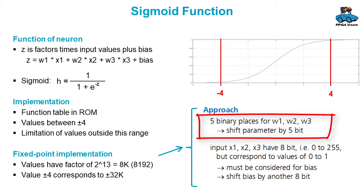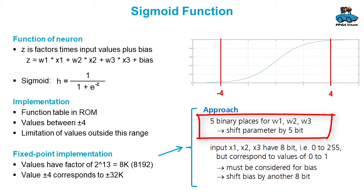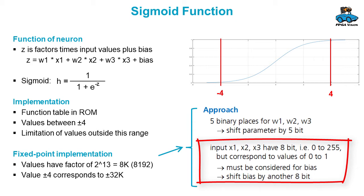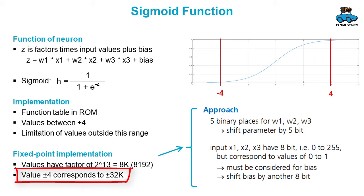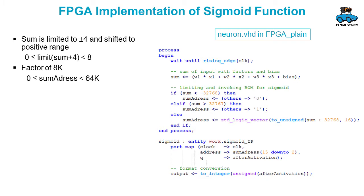The factors w have five binary places, so we shift by 5 bit. The inputs x have 8 bit, so we shift by 8 bit. This makes a total of 13 bit corresponding to 8192, so 8k. This means that the value plus minus four corresponds to a fixed point value of plus minus 32k. This is implemented in the VHDL code.